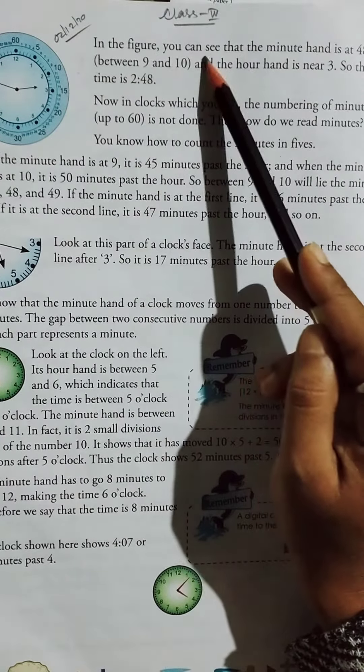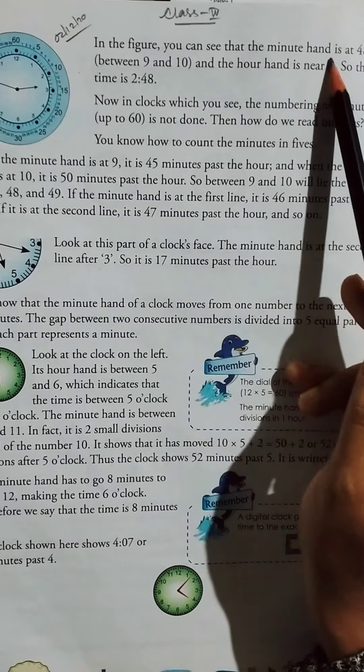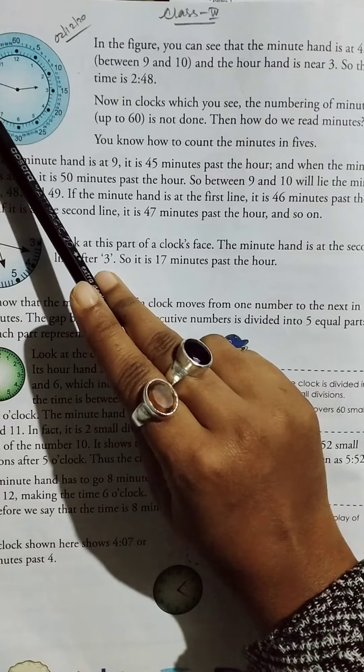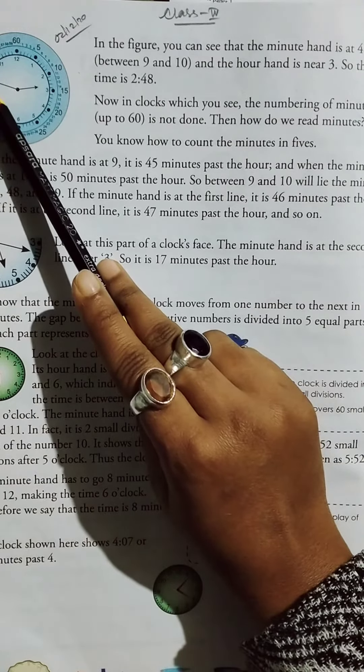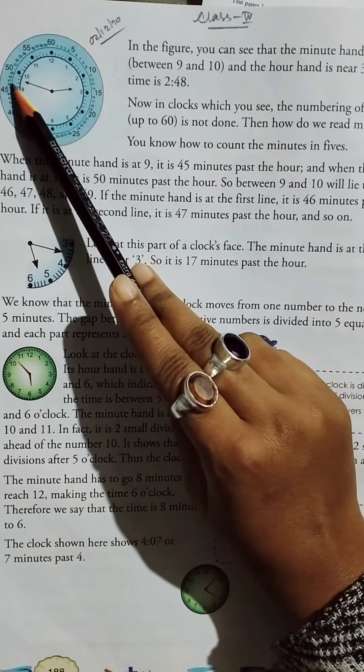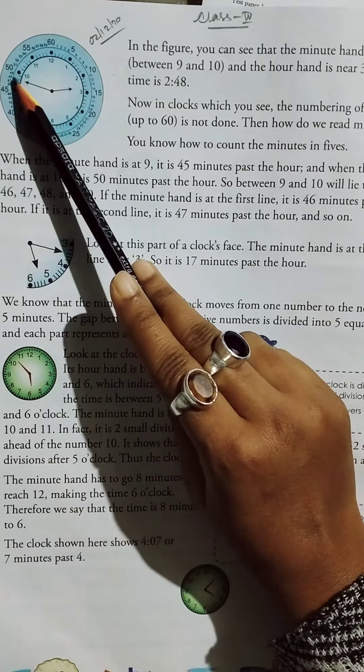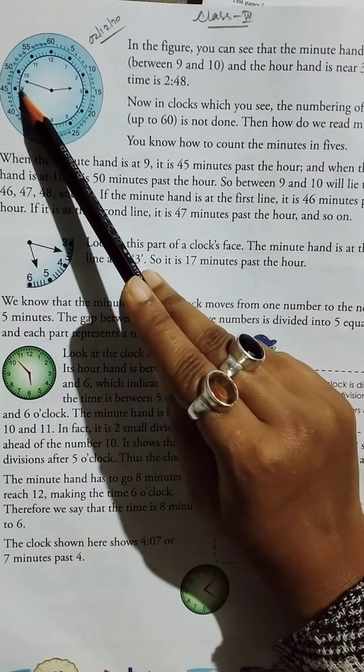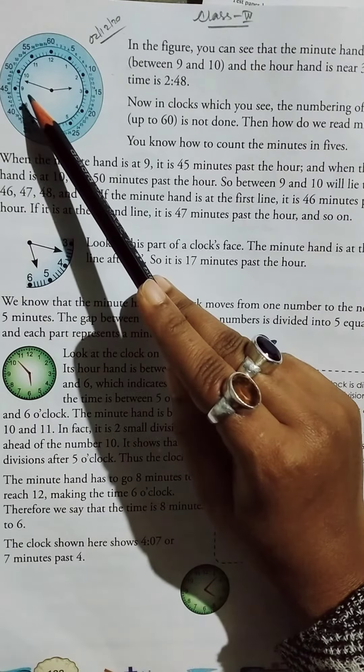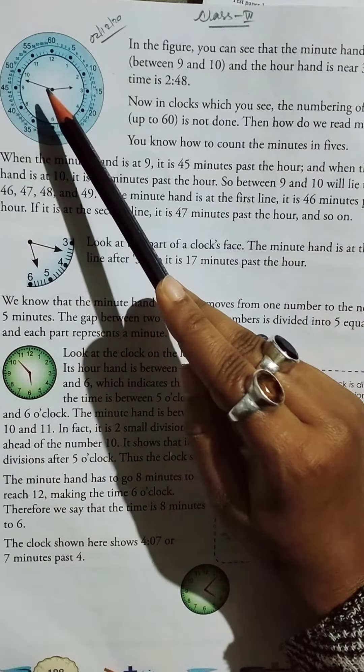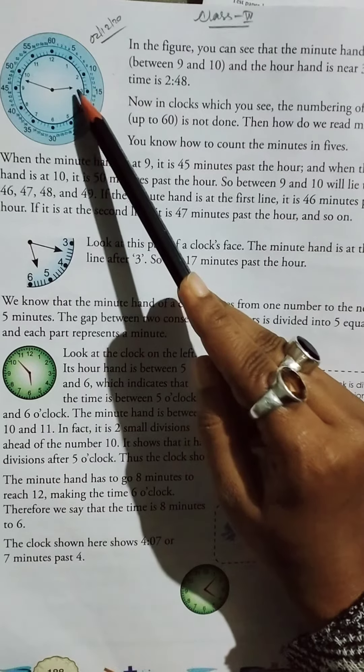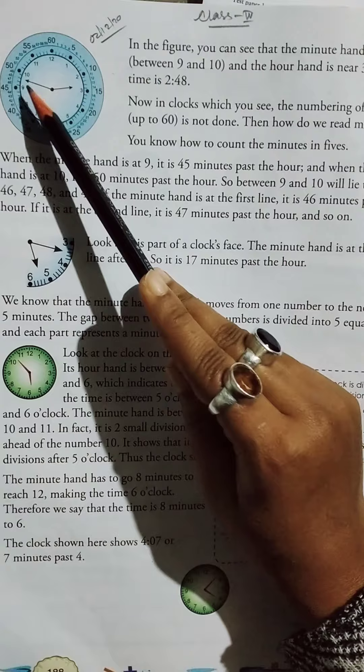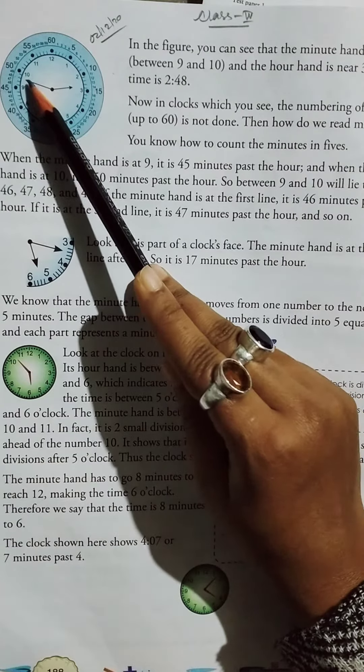In the figure, you can see that the minute hand is at 48. 45, 46, 47, 48, okay. Between 9 and 10, between 9 and 10, and the hour hand is near 3.